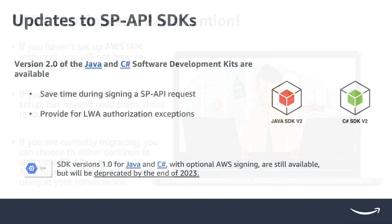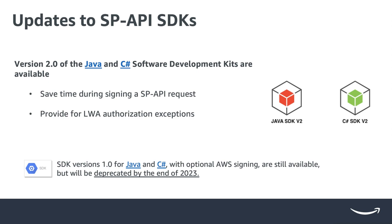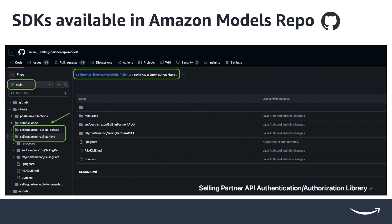For those using our SDKs, we have more great news. Version 2.0 of the Java and C# SDK is now available. These new versions save request signing time and also come with features that make your life easier, like the custom LWA exception giving you more detailed insights on errors during LWA authorization. While no immediate action is needed, we do highly recommend transitioning to these updated SDKs.